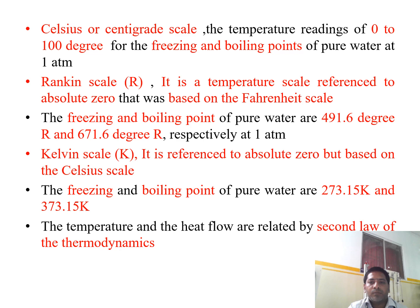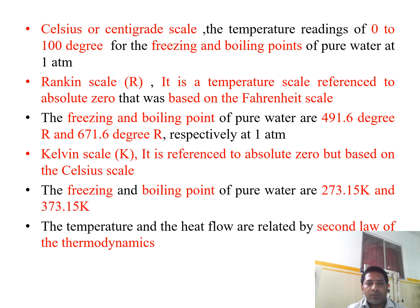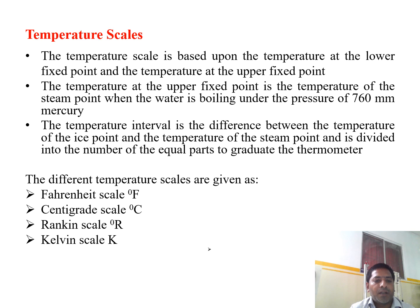In Celsius, the centigrade temperature readings are 0 to 100 degrees for the freezing and boiling points of pure water at 1 atm. The Rankine scale, denoted by R, is a temperature scale referenced to absolute zero but based on the Fahrenheit scale. The freezing and boiling points of pure water are 491.6 degrees Rankine and 671.6 degrees Rankine respectively at 1 atmospheric pressure. The Kelvin scale, denoted by K, is referenced to absolute zero but based on the Celsius scale. The freezing and boiling points of pure water are 273.15 Kelvin and 373.15 Kelvin. Temperature and heat flow are related by the second law of thermodynamics.